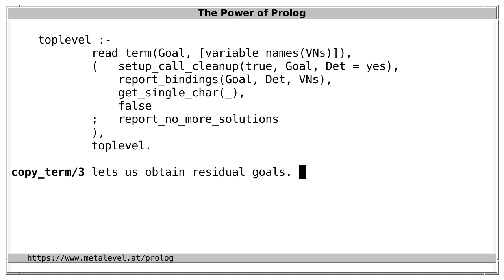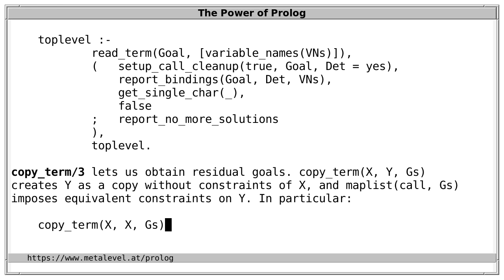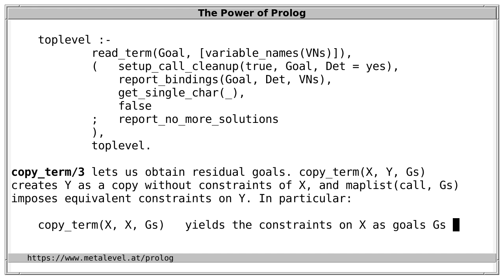Another feature we need is a predicate like copy_term with three arguments, so that we can obtain residual goals. This is also not yet part of the Prolog standard, but several systems already provide it. copy_term(X, Y, Gs) creates Y as a copy without constraints of the term X, and also yields Gs as a list of goals that, when called, impose equivalent constraints on Y. It's like the standard copy_term/2, except it also lets us reason about the constraints that a variable is involved in. copy_term/3 will likely play a role when writing a top level.